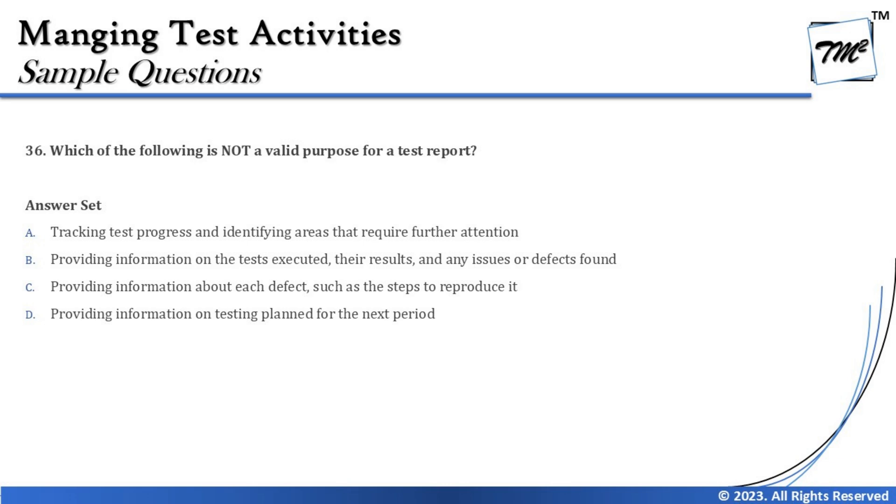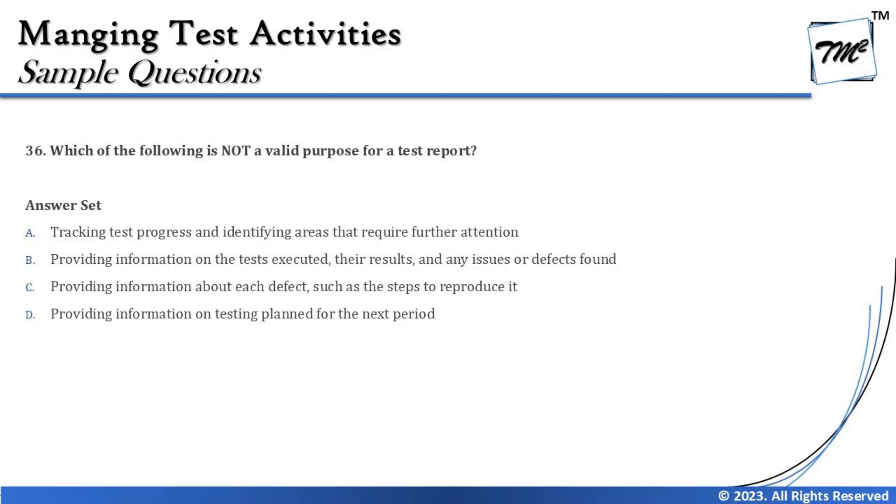Option A says tracking test progress and identifying areas that require further attention — indeed, that is one of the valid characteristics of writing a test report and is a major purpose of the test progress report, helping stakeholders monitor status and understand required action items. Option B says providing information on tests executed, results, and any issues or defects found — yes, these elements including test cases, execution status, blockers, risk status, and defects are covered in the test summary report.